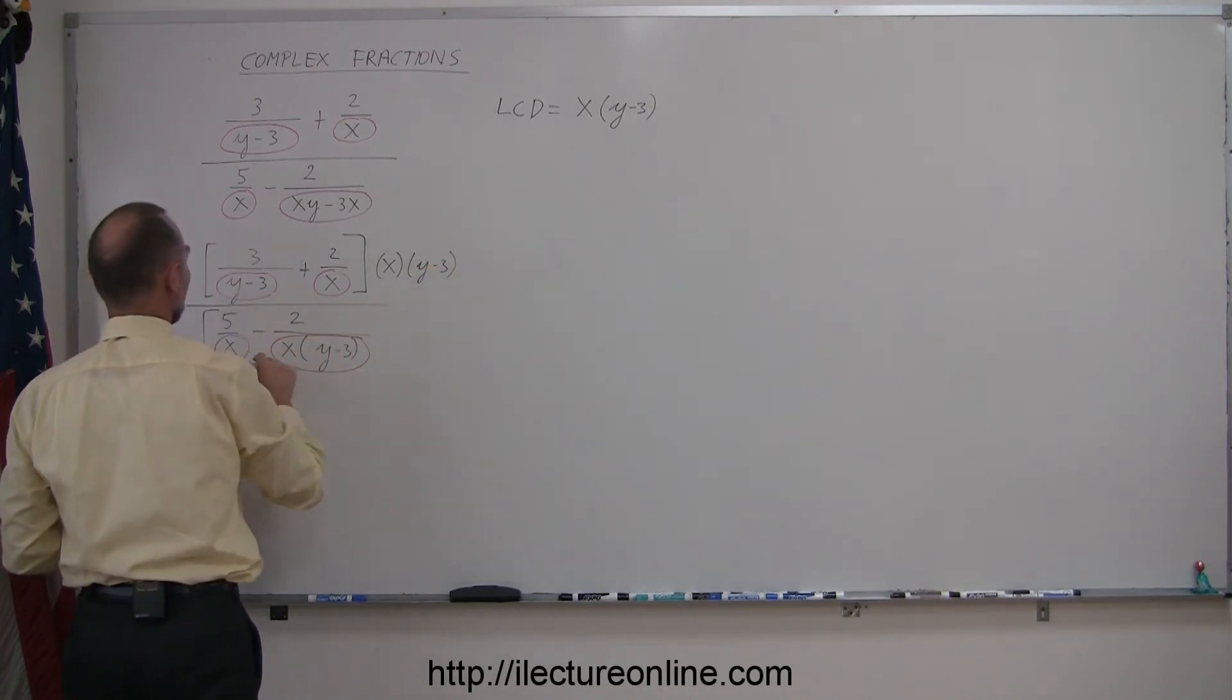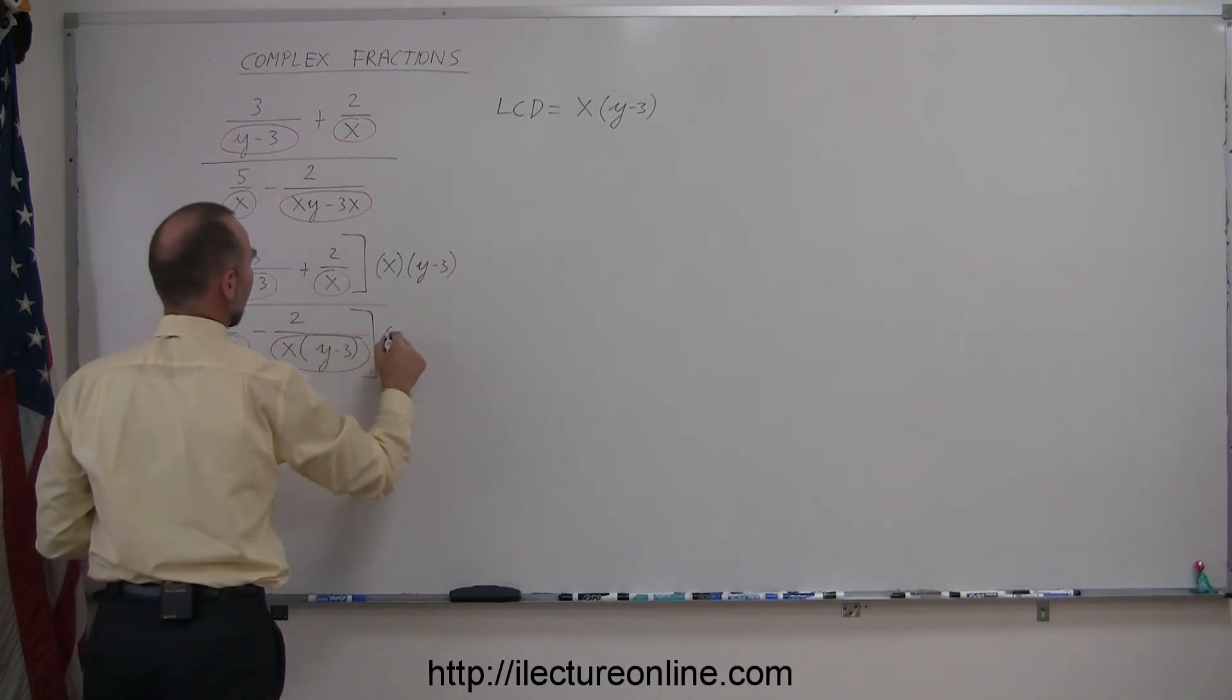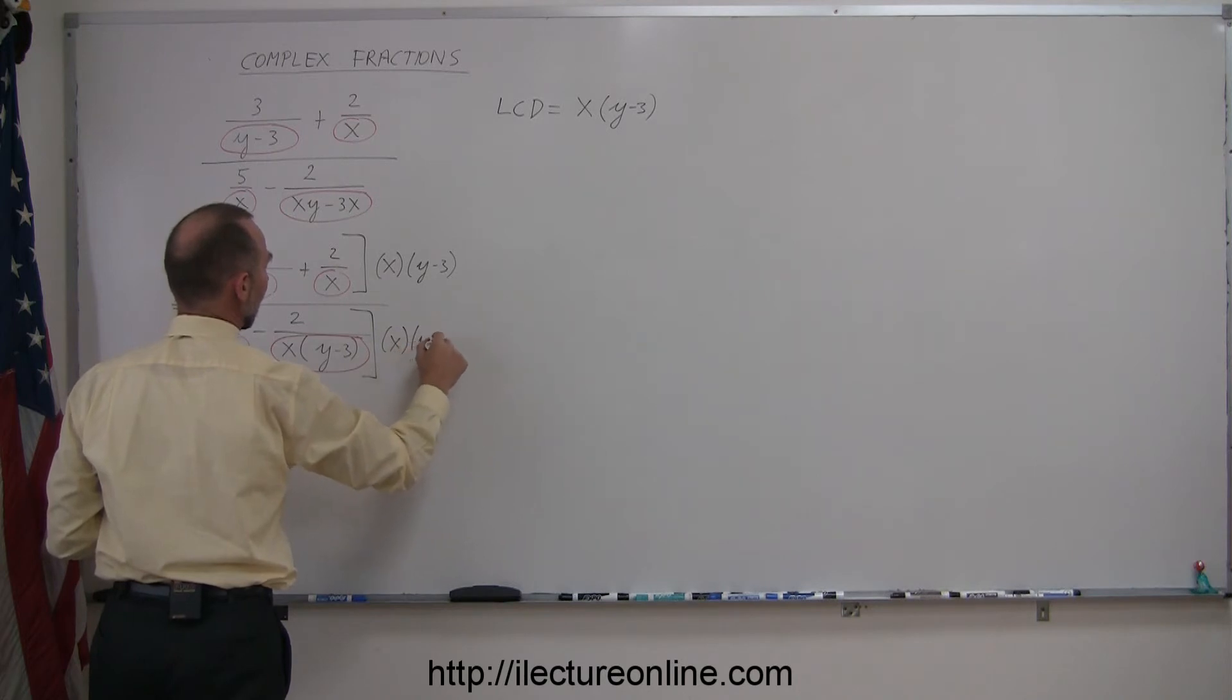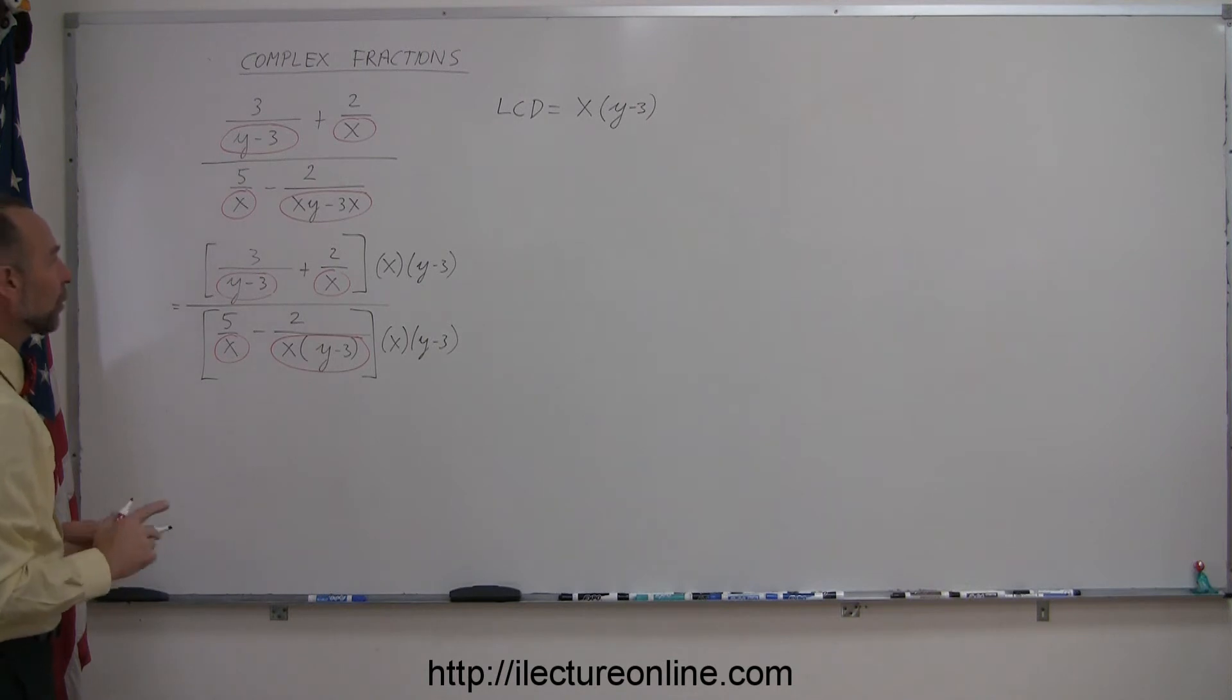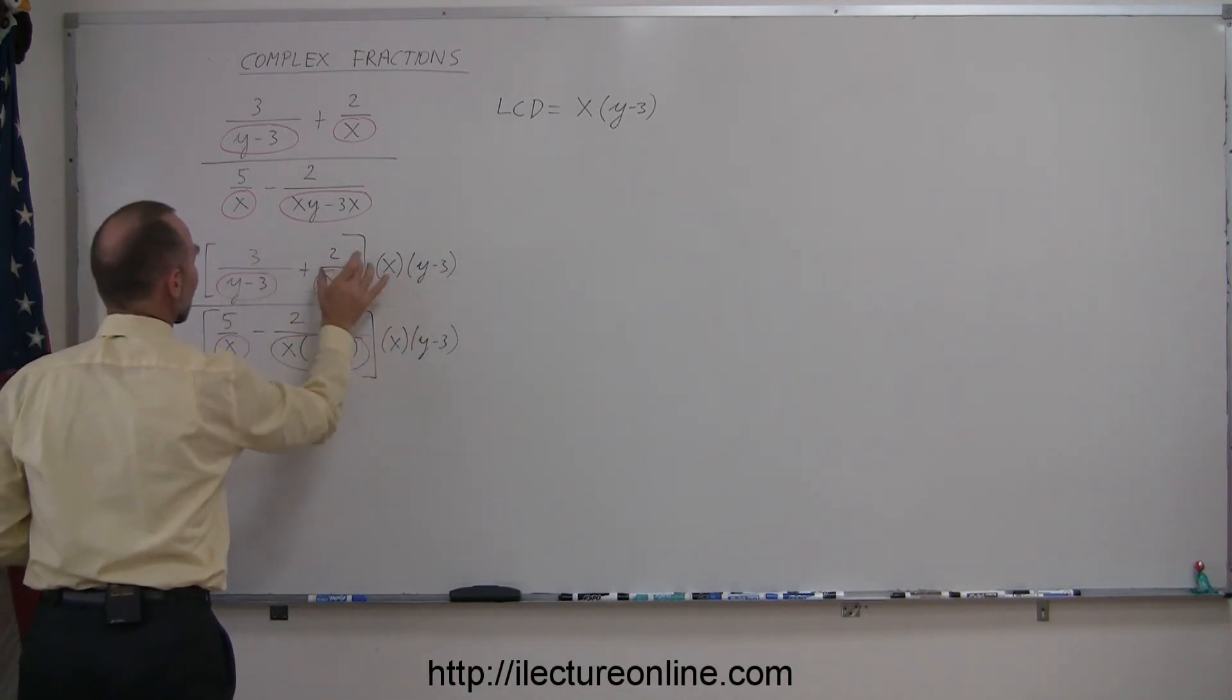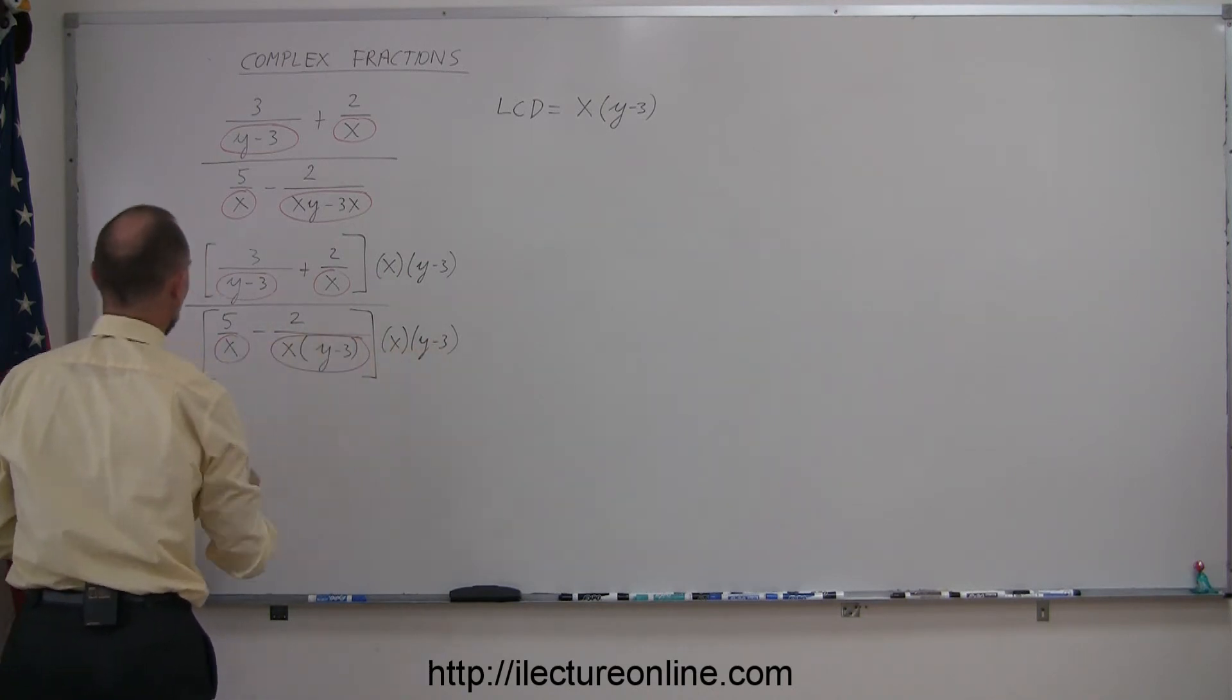And here I'm going to multiply this denominator by x times (y minus 3). Now this gets a little bit more complicated, so I'm going to go ahead and write this out. I'm going to multiply this times this, and this times this, and same this times this, and this times this.